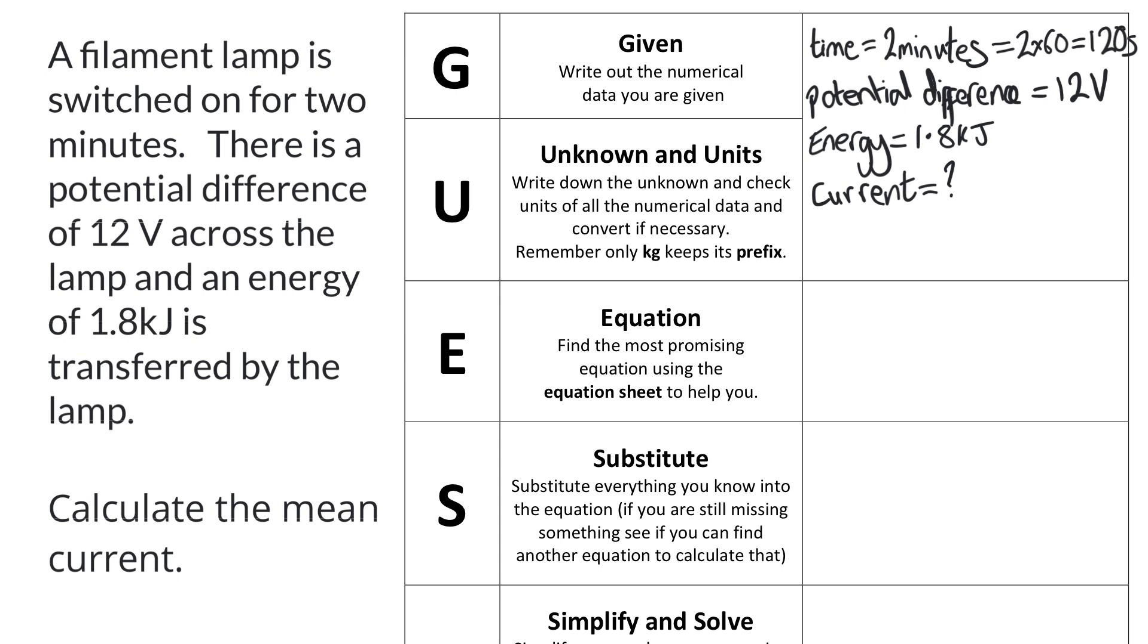12 volts is in the correct unit. 1.8 kilojoules has got a prefix of kilo, which means times 10 to the 3, so my energy is 1.8 times 10 to the 3, or 1800 joules.